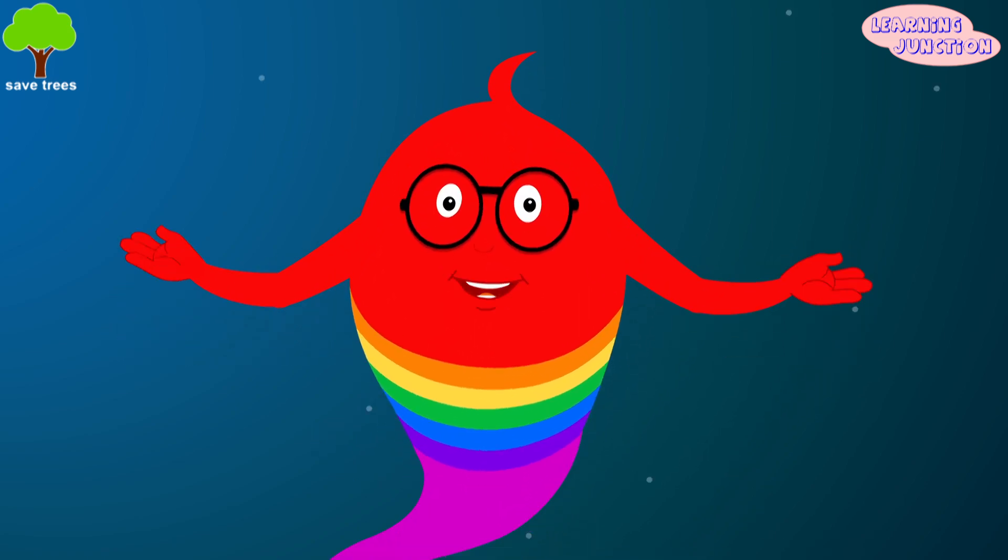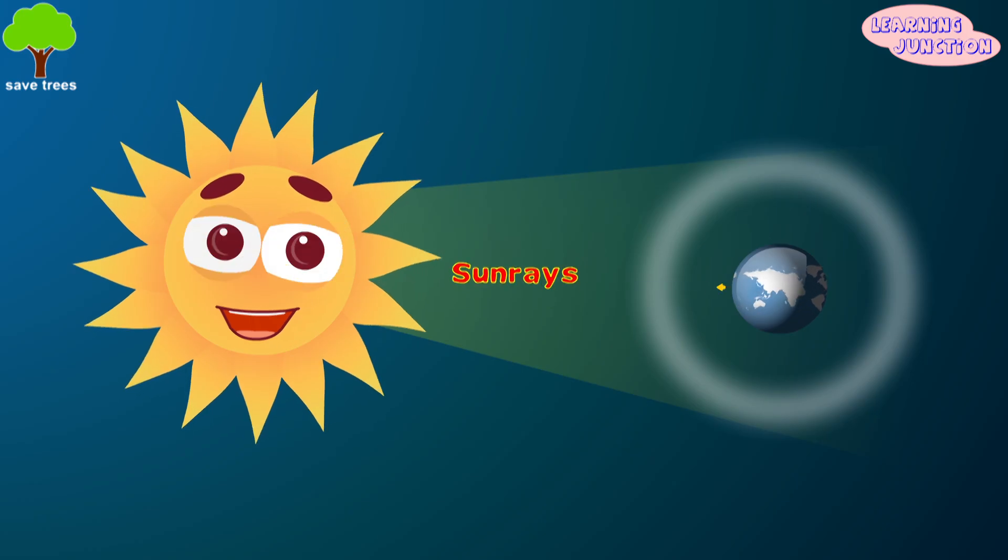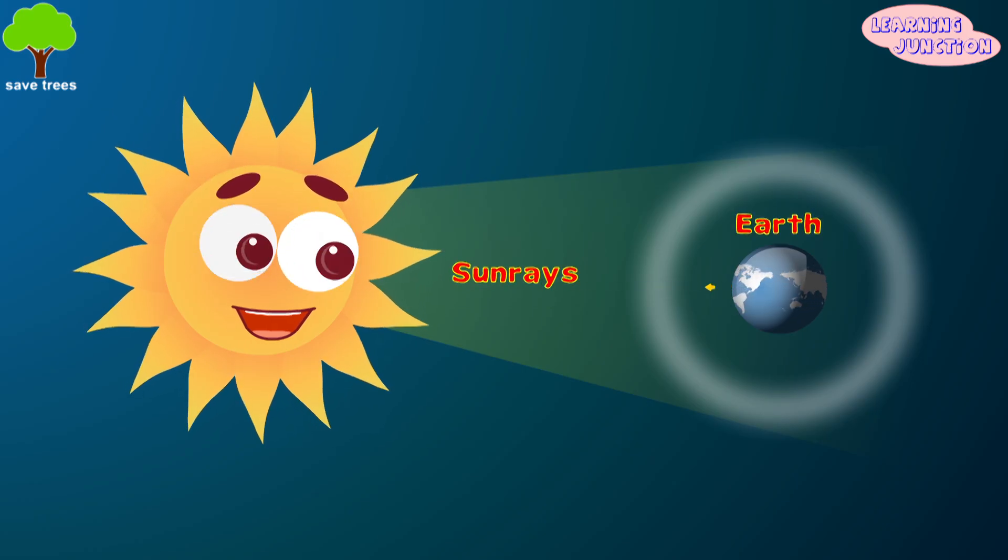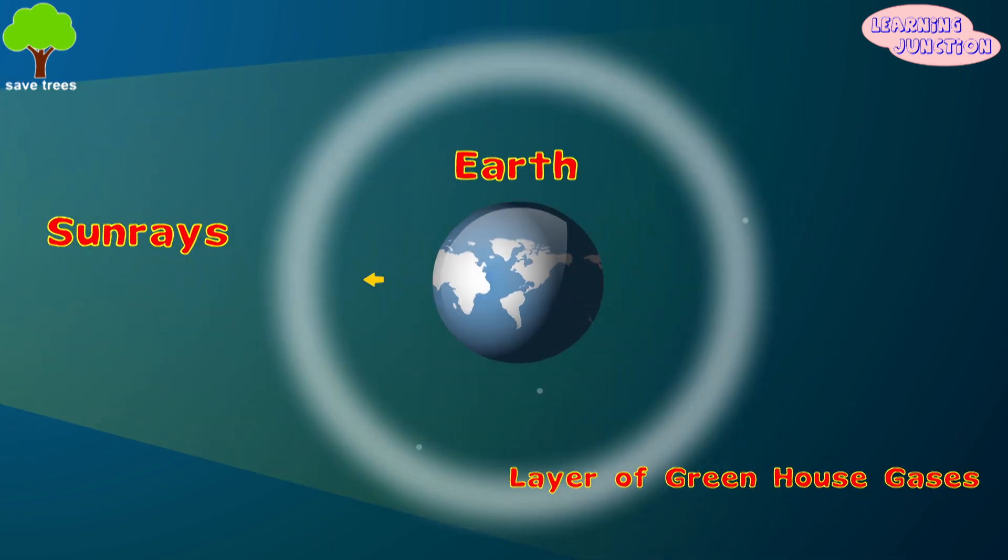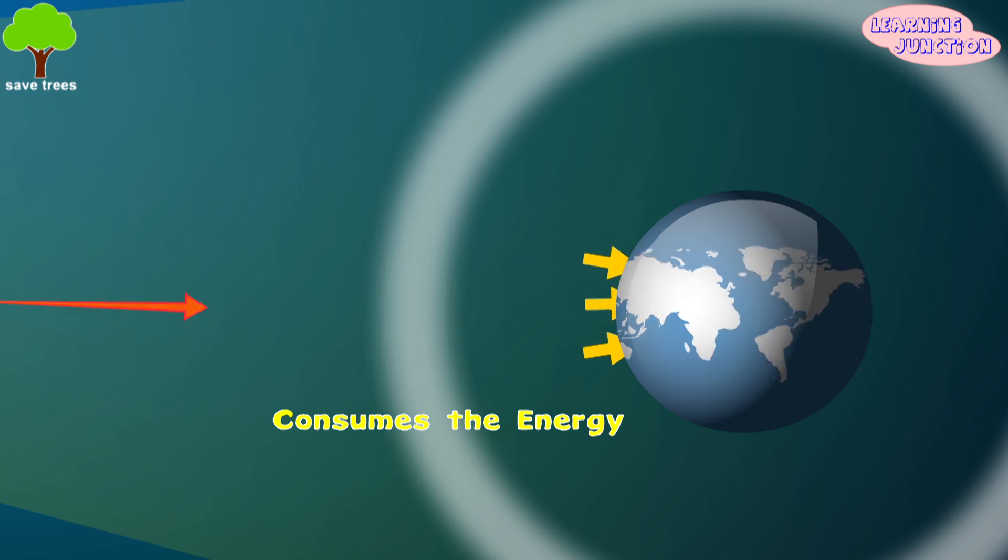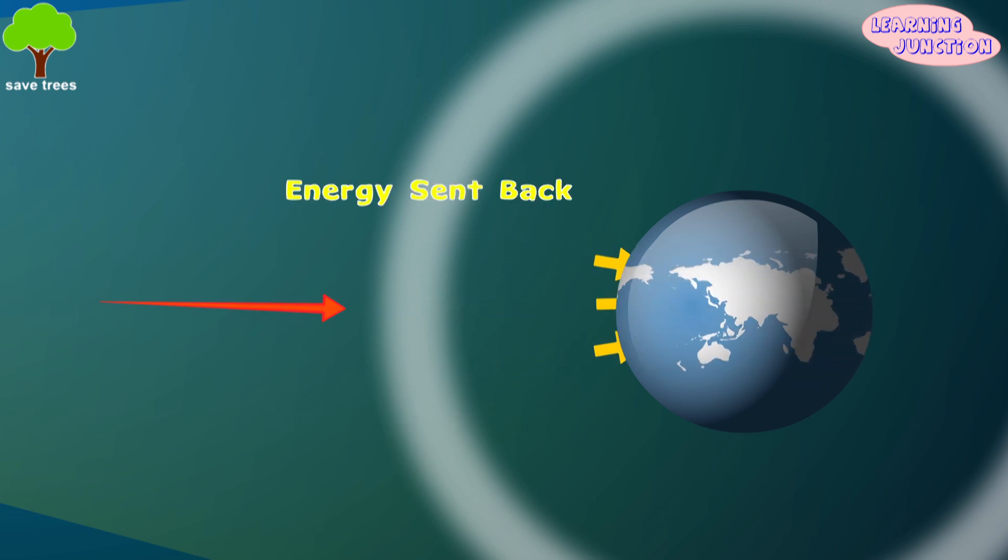Let's see how the greenhouse effect works. Sun rays enter Earth's atmosphere passing through the layer of greenhouse gases. Earth's surface absorbs the energy from the sun. This energy is sent back into the atmosphere.